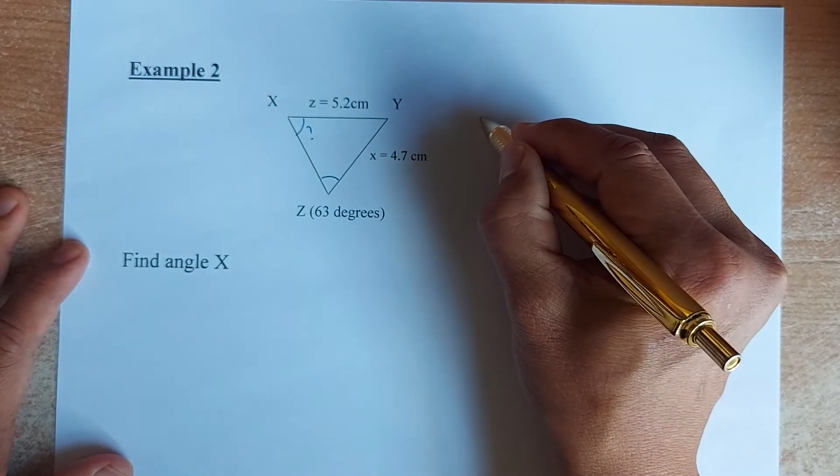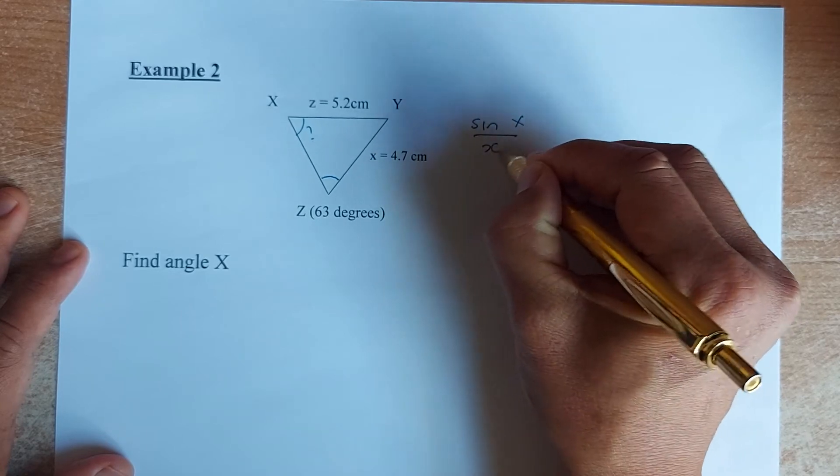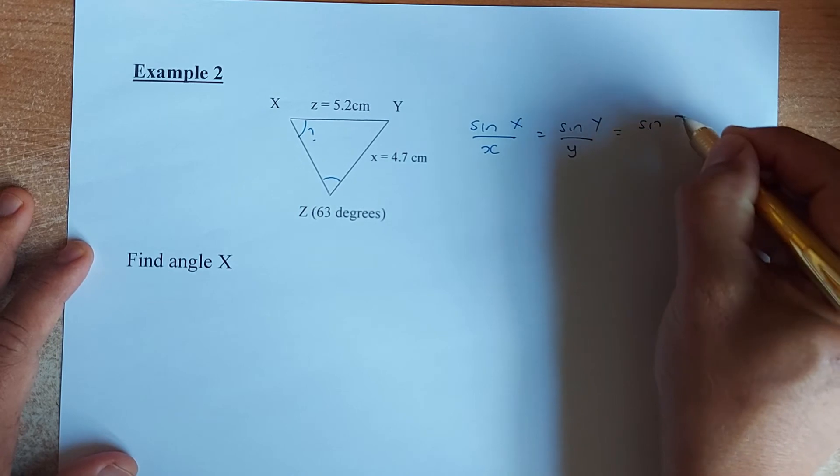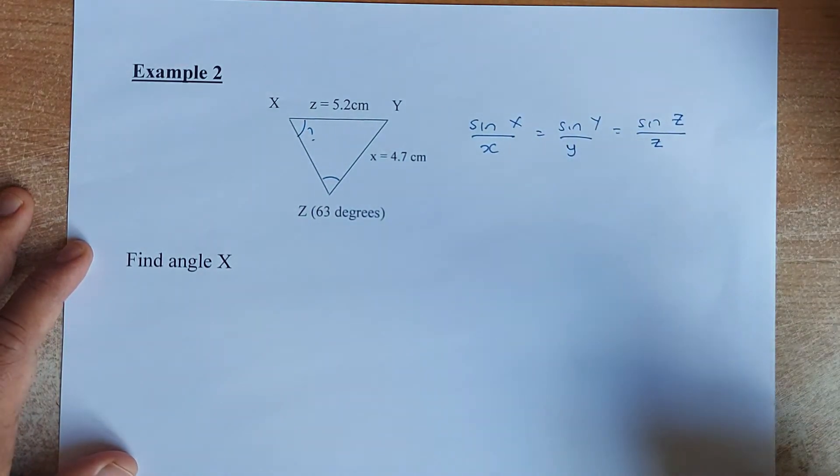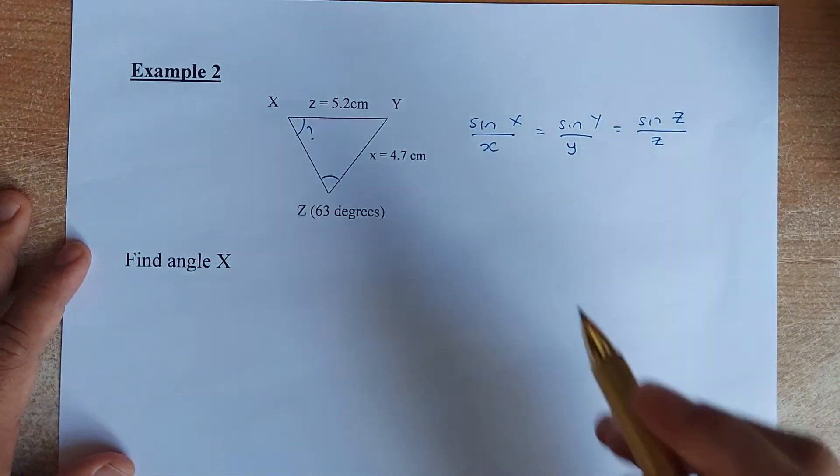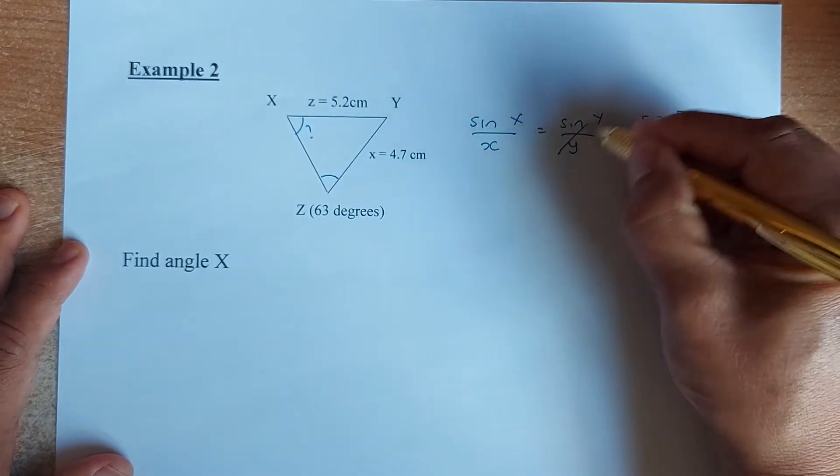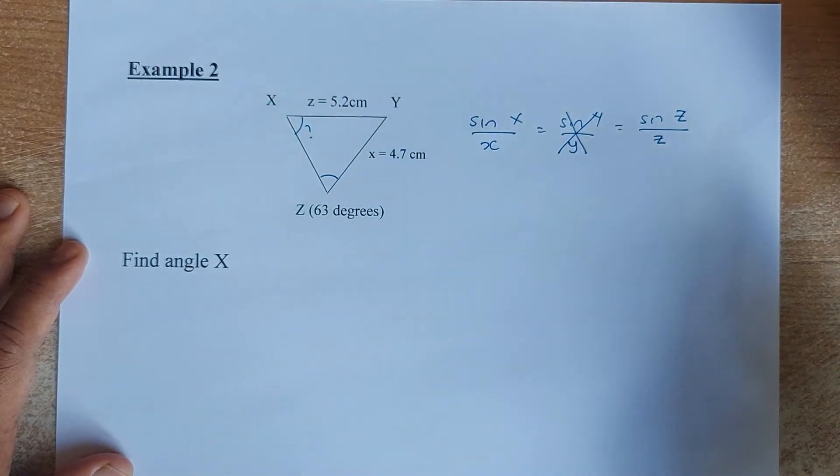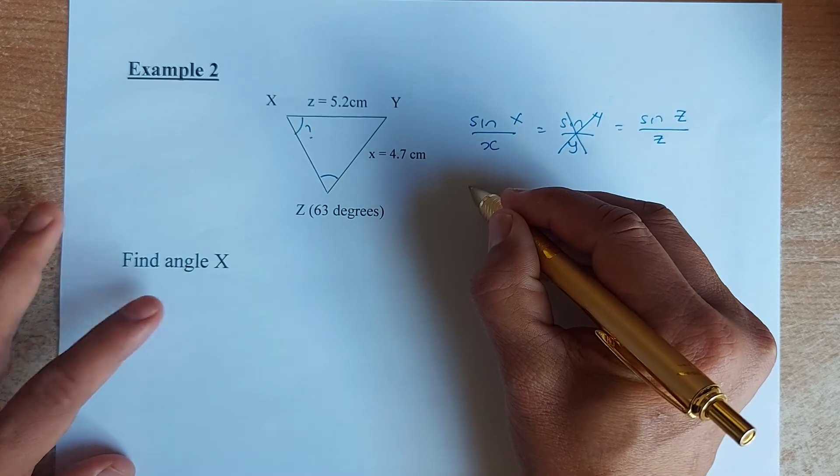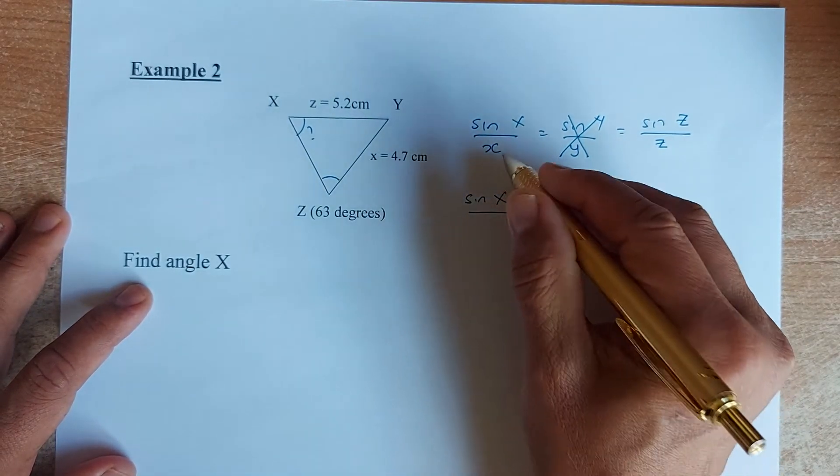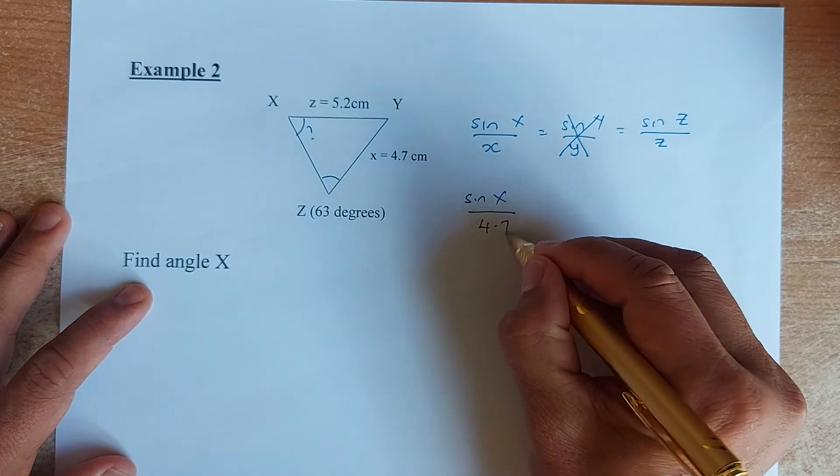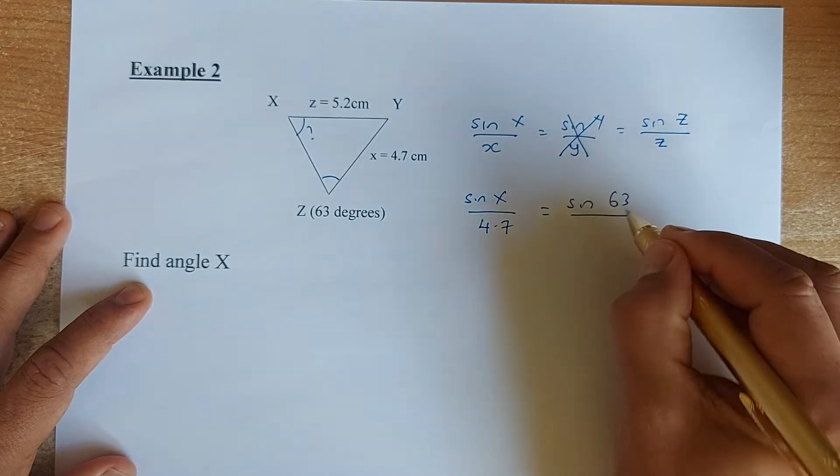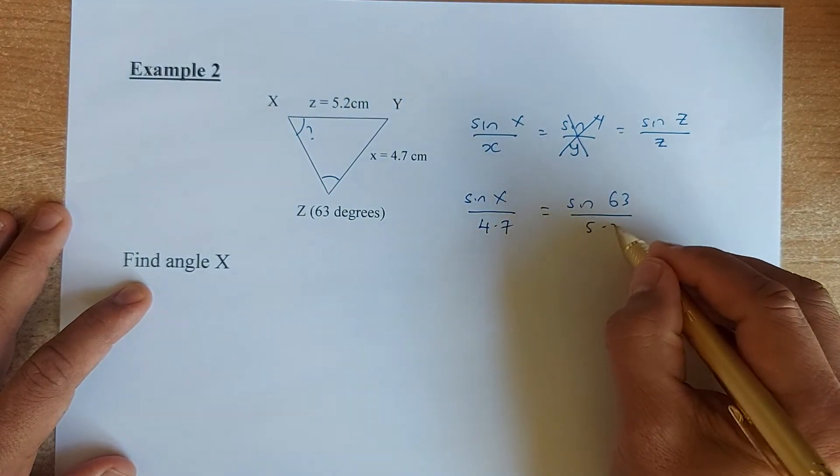So again, the formula is sine X over x equals sine Y over y equals sine Z over z. So one of them can be eliminated. In this case, there's no Y, so we can cancel the Y. So now we have sine X over x equals sine Z over z. The next step, we're going to put in the value. So sine X is what you're going to find. X is the value here, 4.7. Sine Z, Z is 63, so sine 63 and lowercase z is 5.2.